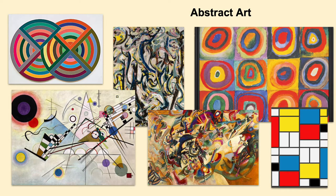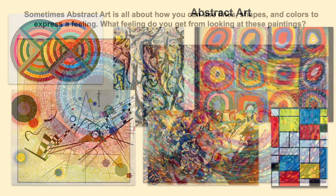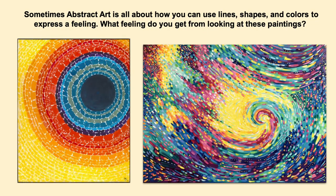Abstract artists take art elements like line, shape, and color and put them together to create something new and interesting. In abstract art we don't see real-world objects like houses, animals, flowers, or people in the art. The art simply shows lines, shapes, and colors.